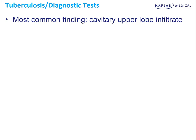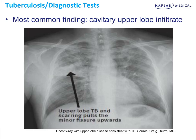The most common finding on imaging is going to be a cavity in the upper lobes. Here's a good example — you can see upper lobe tuberculosis and some scarring that's pulling the minor fissure upwards. The scarring is from the initial infection which initially healed, and the cavity is from reactivation that's probably causing the patient's current symptoms.